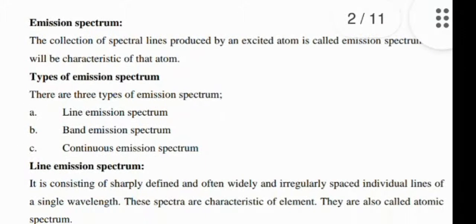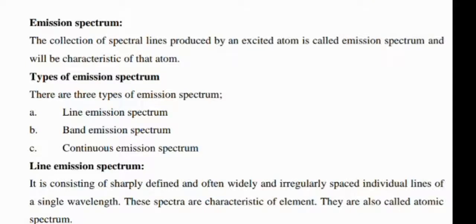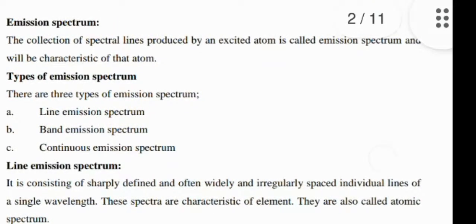Spectroscopy includes emission spectrum. What is emission spectrum? The collection of spectral lines produced by an excited atom is called the emission spectrum and represents characteristics of that atom. Types of emission spectrums are three, including